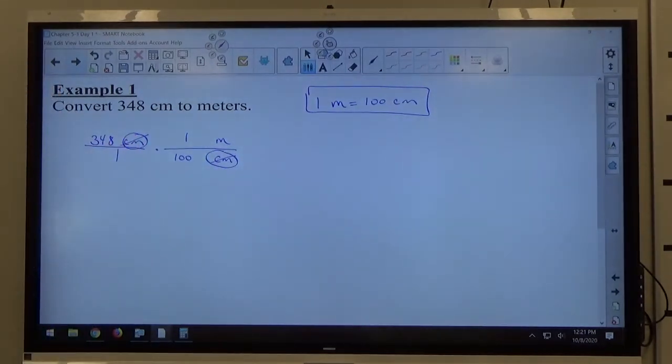I get the unit of centimeter on top, the unit of centimeter on the bottom, and I'm left with just a numerical statement. If my numbers are in the same position, top-top, I multiply. If they're in different positions, I divide.